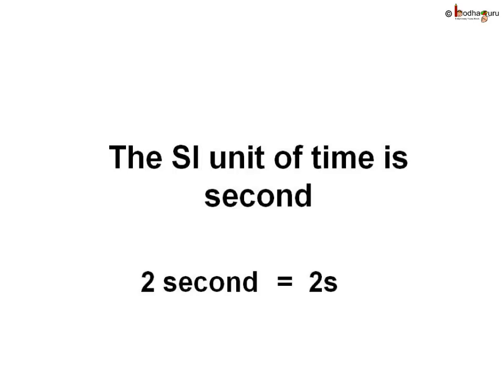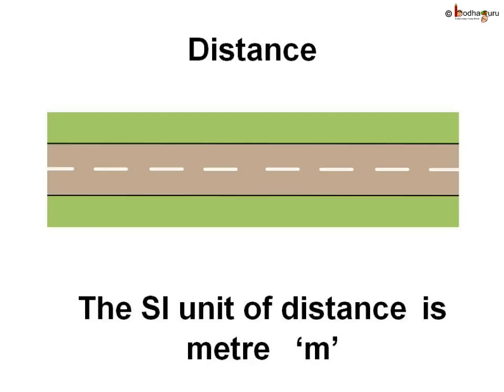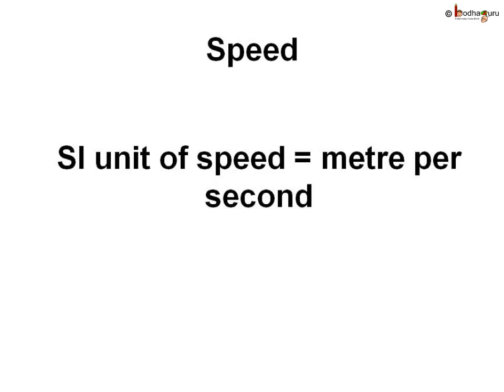We already know the SI unit of time is second, denoted by small s. The larger units of time are minutes, hours, etc. The SI unit of distance is meter, with symbol small m. The larger unit of distance is kilometer. Since speed is distance divided by time, the base unit of speed is meter per second.